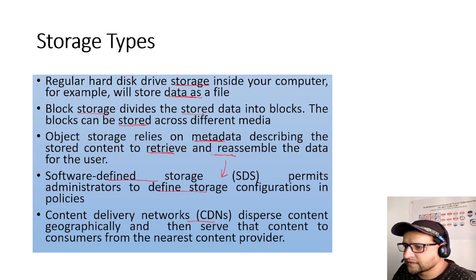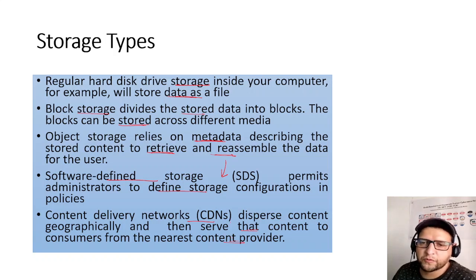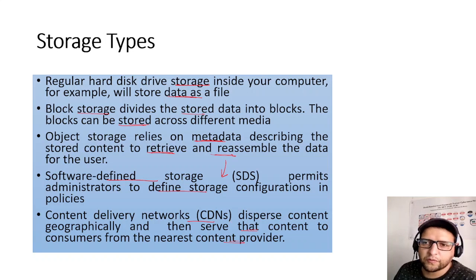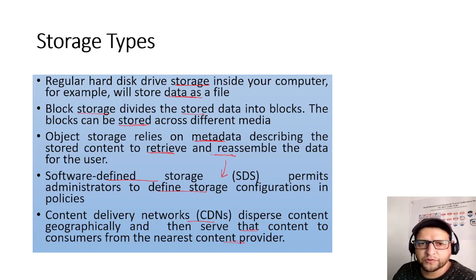Content Delivery Network disperses content geographically so that it is served to consumers from the nearest content provider. In AWS, for example, edge locations are used — if you want to share a video, instead of routing to the origin server, content is served from an edge location near the consumer, reducing latency so they can access the content quickly.